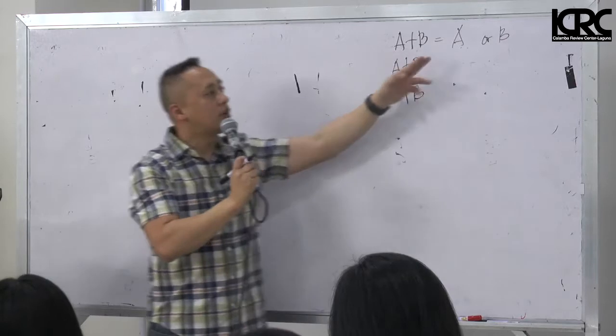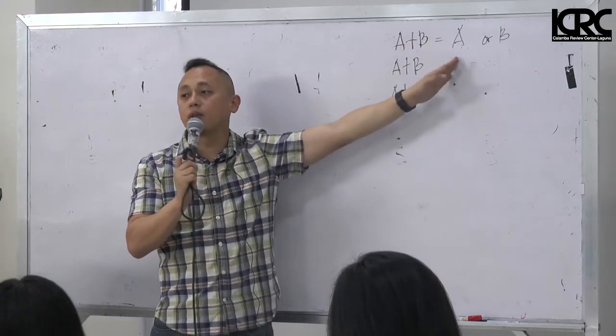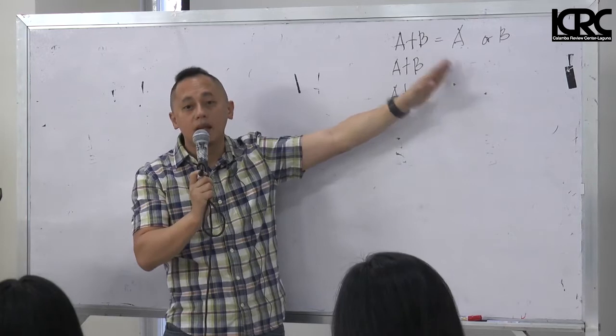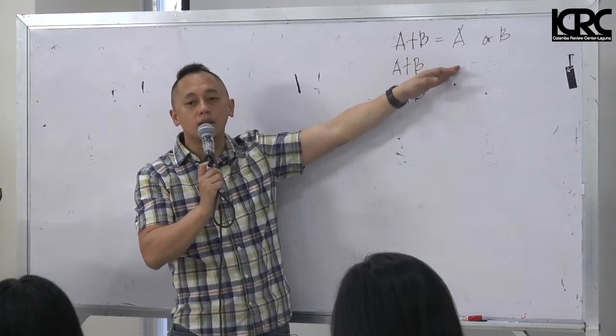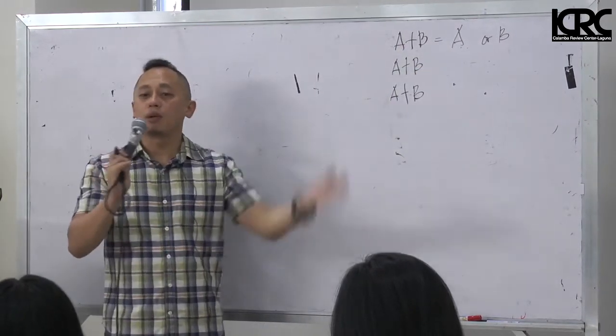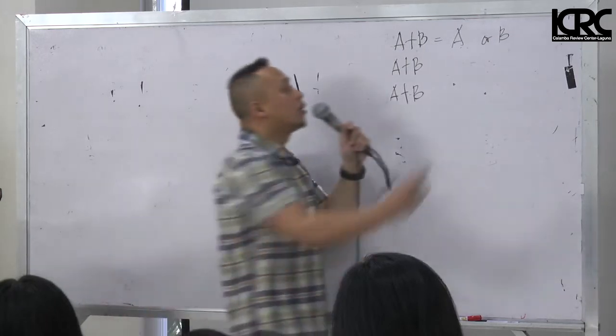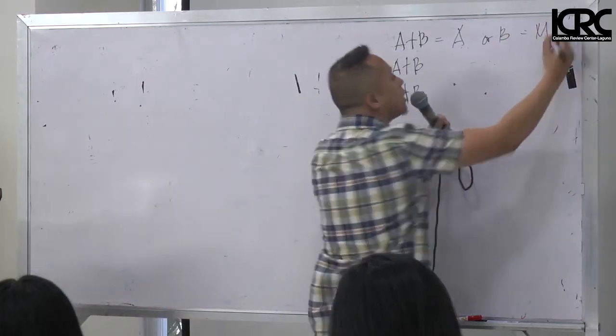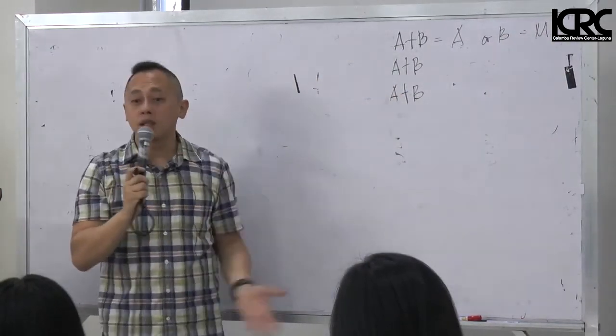Parang boyfriend, girlfriend, nag-asawa, magsasurvive yung apelyido ng lalaki. Tama? What do we call this? Parang boyfriend, girlfriend, when they have a union, what do you call that? You call this a merger. So they will merge into one.